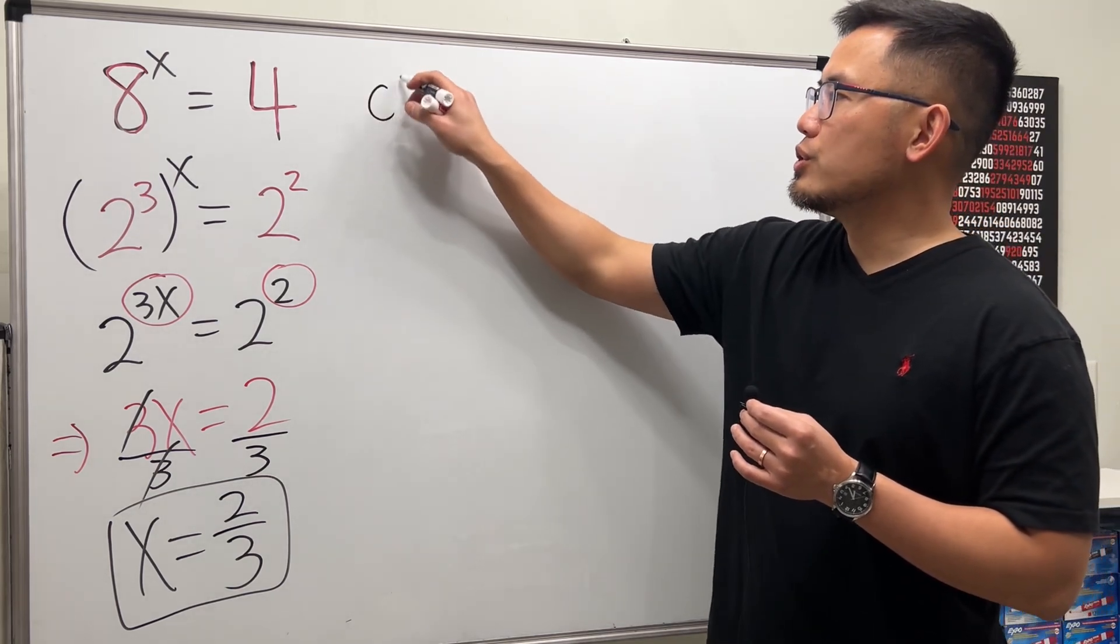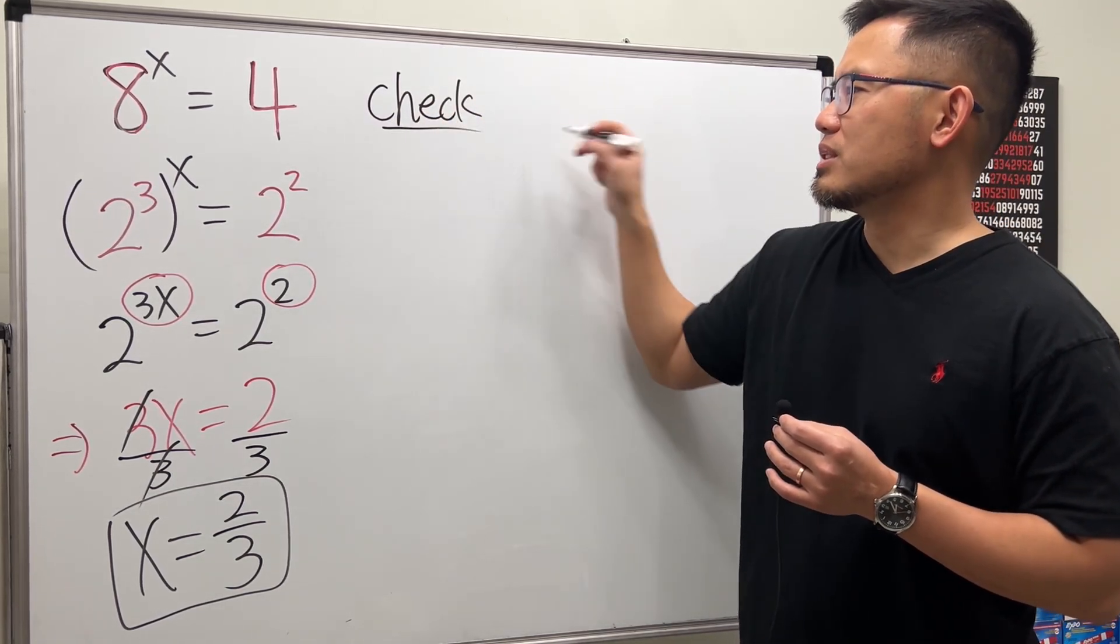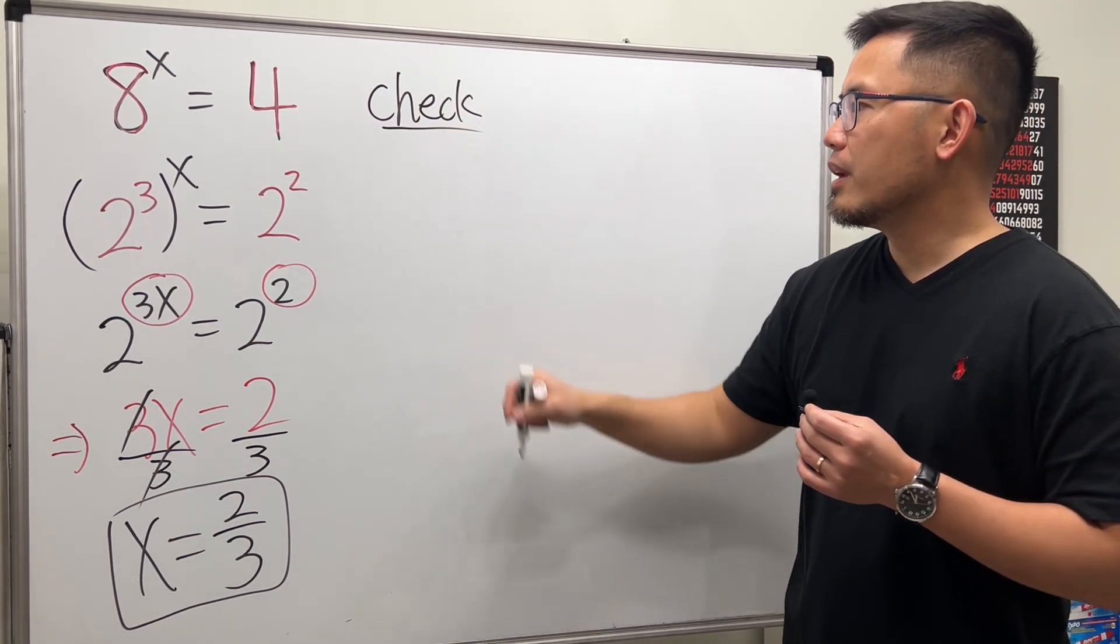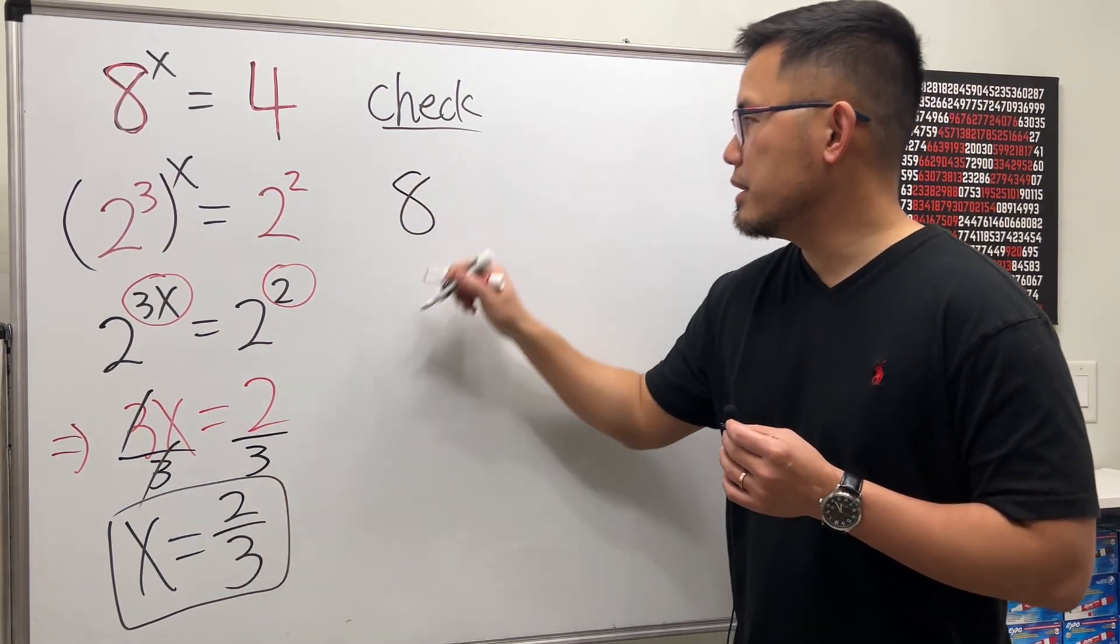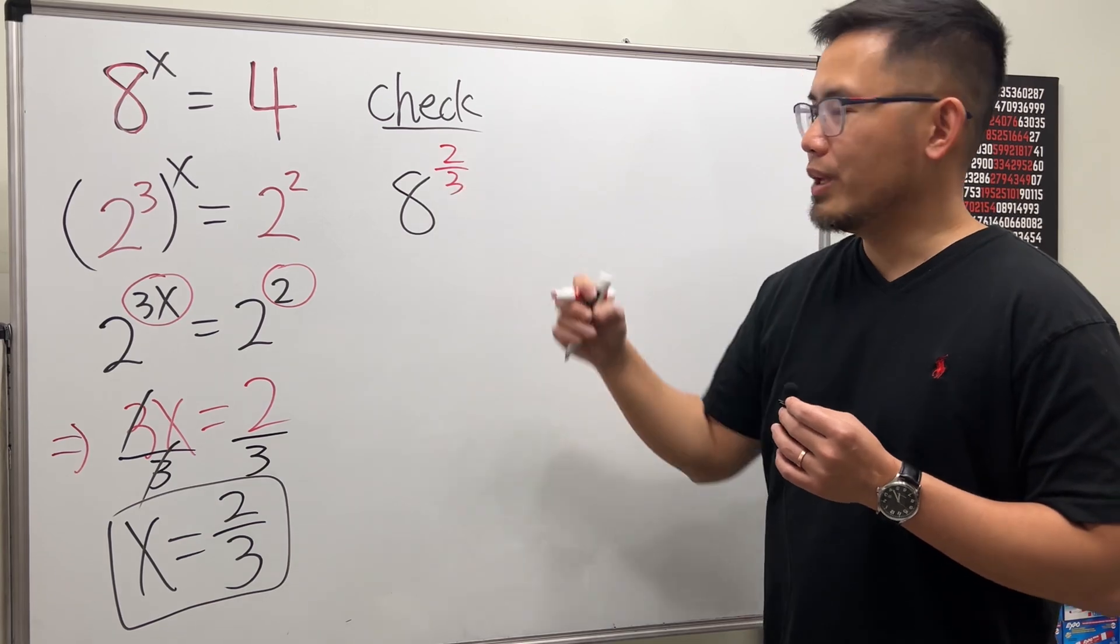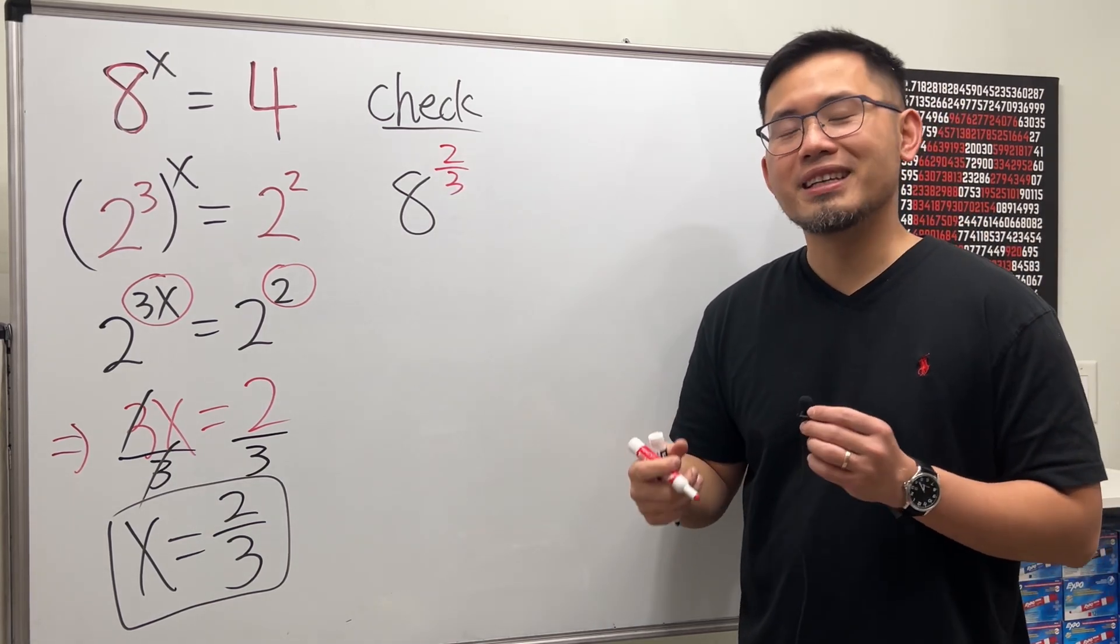Now I would like to show you guys the check to see if this is indeed going to work. So what is 8 to the power of 2 over 3? Wow, we have a rational exponent. How do we take care of that?